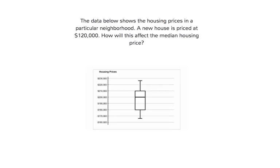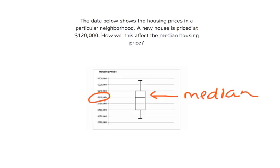The data below shows the housing prices in a particular neighborhood. A new house is priced at $120,000. How will this affect the median housing price? Our median housing price is right here in the middle of this box plot, and it looks like it's $200,000.